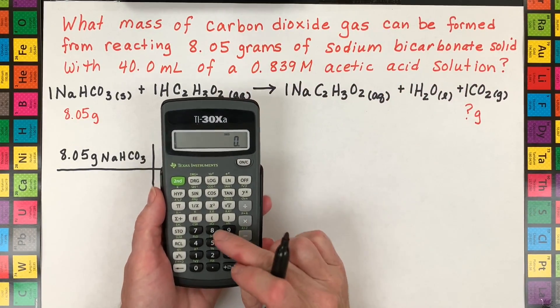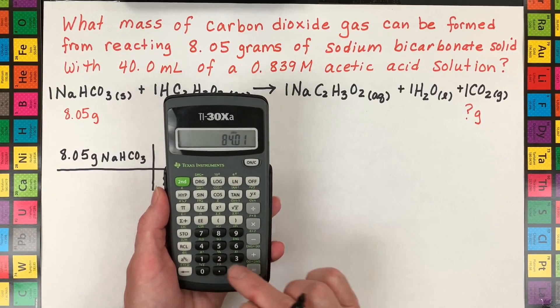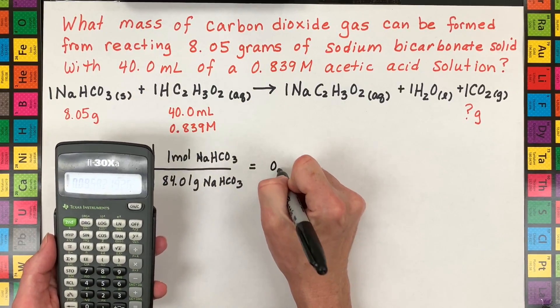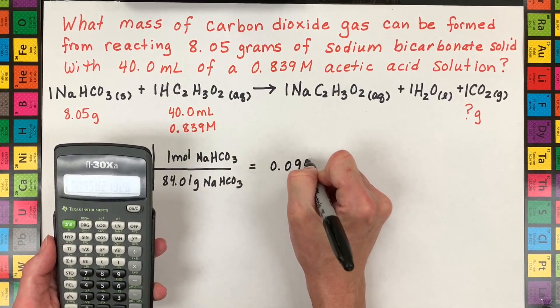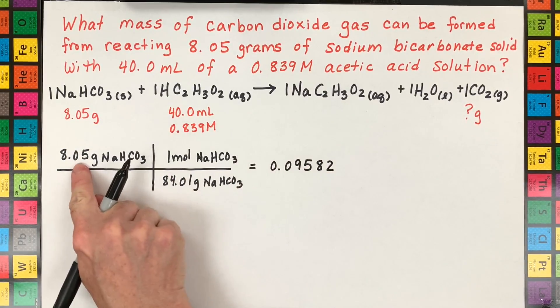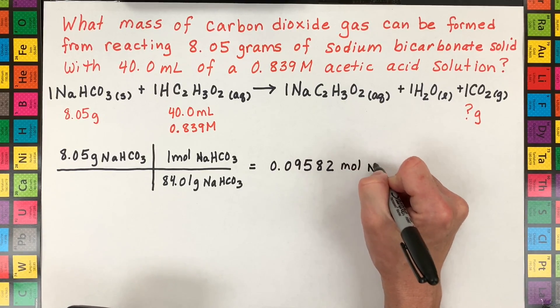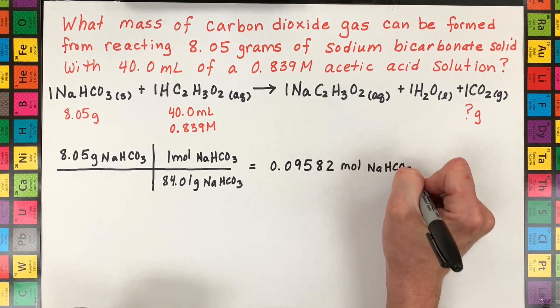So take your calculator and type in 8.05 and then divide that by 84.01 and we get a mole amount of 0.0958 and I'm going to carry some extra sig figs. I'll carry at least one. I have three here and four here so let's carry this out to four moles of sodium bicarbonate. Okay so that's our first step.